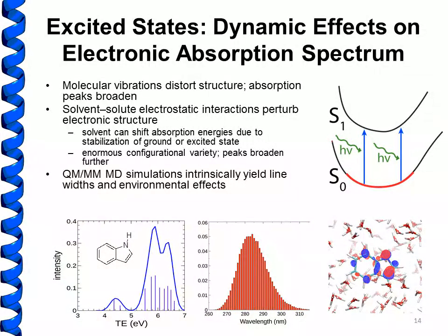In this example we've calculated the electronic absorption spectrum of indole, which is in pretty reasonable agreement with experiment. To illustrate the effect of peak broadening, one of the transitions occurs around 280 nanometer wavelength, and there is an enormous broadening in the frequencies at which this transition occurs — we see a huge range of wavelengths between 270 and 300 nanometers for this transition, due to both the effect of vibrational temperature and the perturbing effects of the solvent.